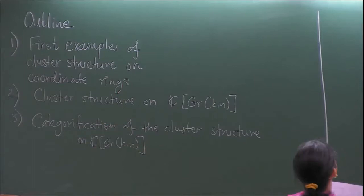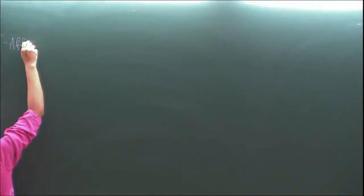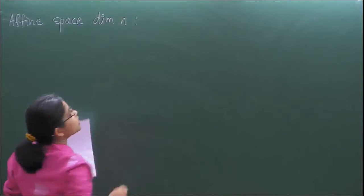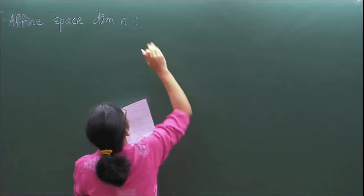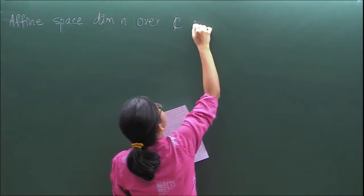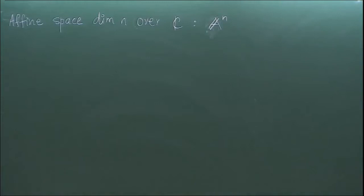Does everyone know about affine variety or projective variety? Good. So first of all, affine space. What is an affine space? Affine space of dimension n is just C^n — n copies of C. My field is going to be complex numbers. We are going to write affine space of dimension n as A^n. This is because we don't want to think about C^n as a vector space; we want to think about it as affine space.